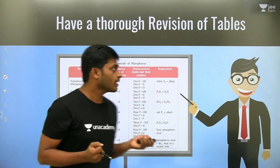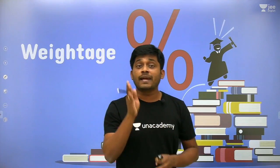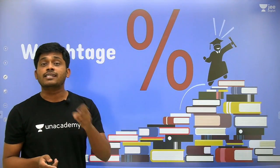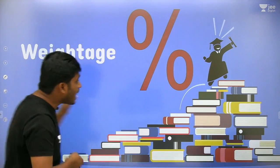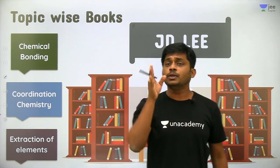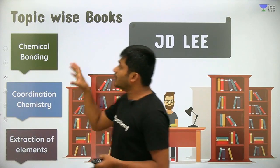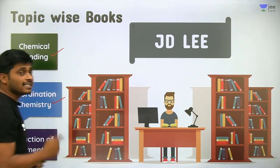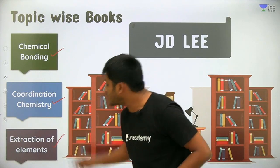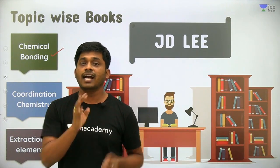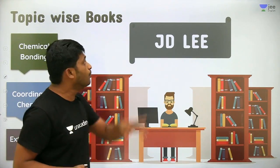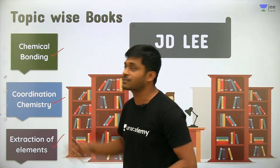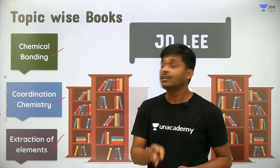You have to give respect to weightage — find out which chapters have the most questions. After analyzing previous papers, the most important questions come from chemical bonding, coordination chemistry, and extraction of elements. If you are thorough with these three chapters, and for these I recommend JD Lee — it is a very good book covering these three topics.